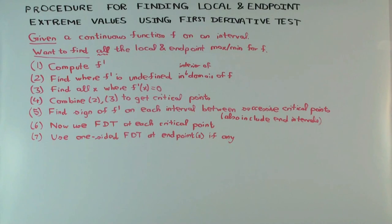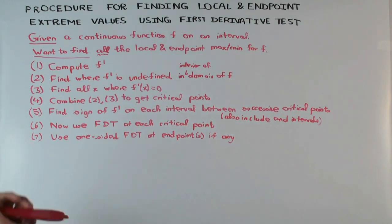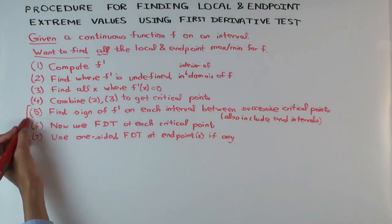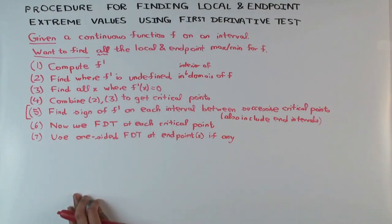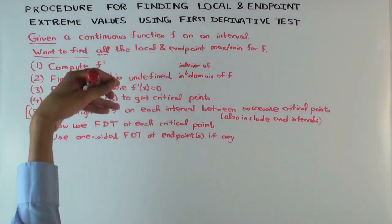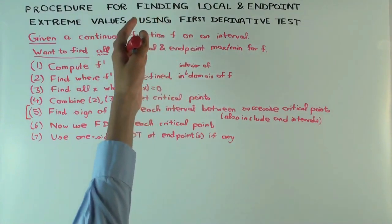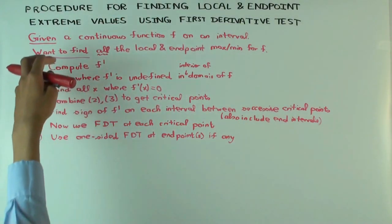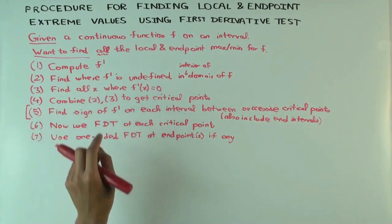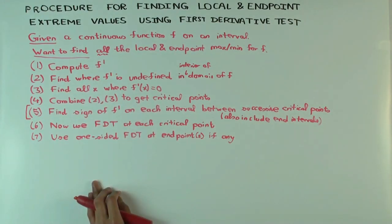So this is the procedure. Now, what's the trickiest part? Generally speaking, there's one part which often confuses people, which is step 5 — finding the sign of F prime on each interval between critical points. This is where you actually do the work that allows you to use the first derivative test. The rest of the process is similar even if you used the second derivative test instead; this step, where you find the sign of the derivative between points, is what's tricky.